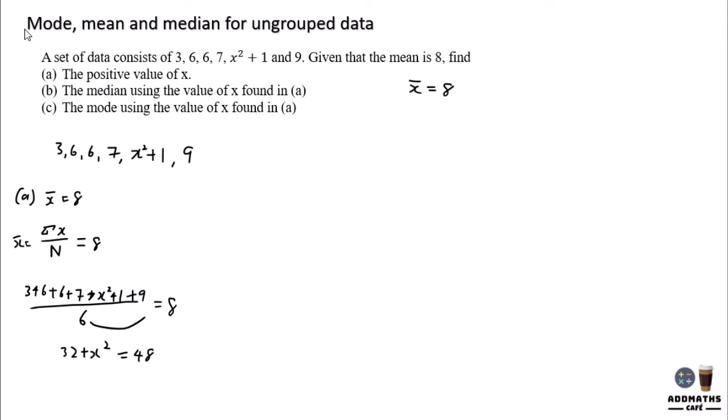Since we bring this division to that side, x squared will then equal to 16. x will then equal to square root plus minus 16, which gives you positive 4 and negative 4. So a negative x cannot be accepted in statistics. The data cannot accept a negative value. Always remember.